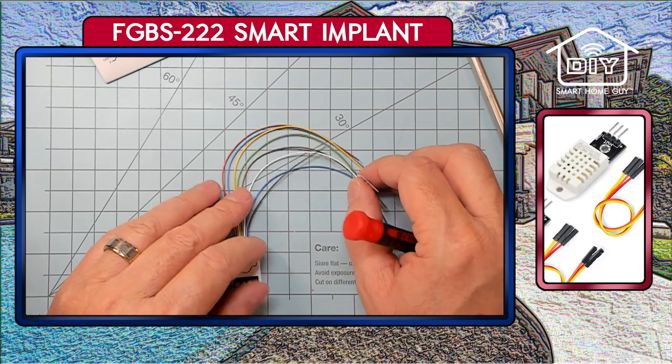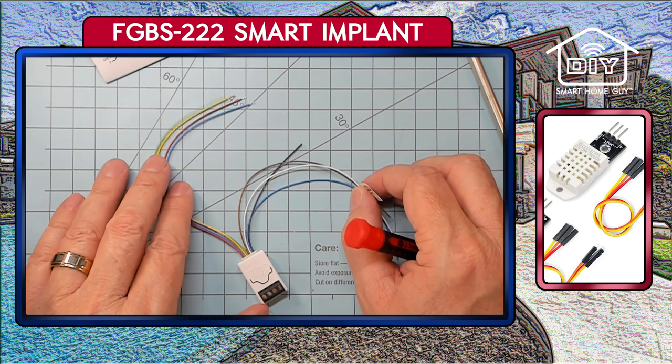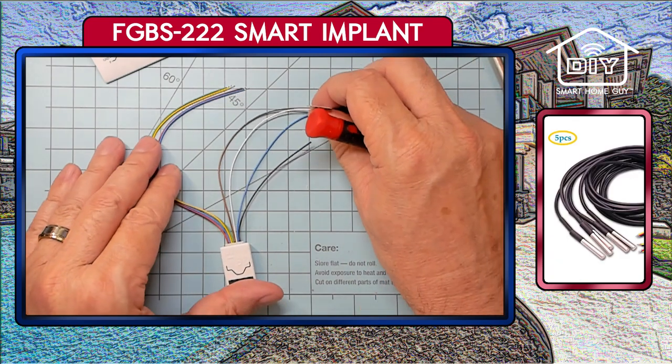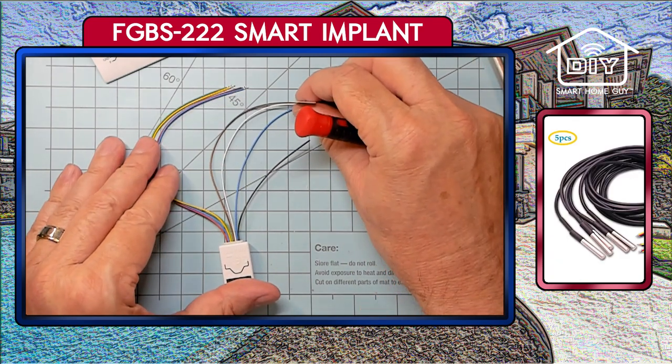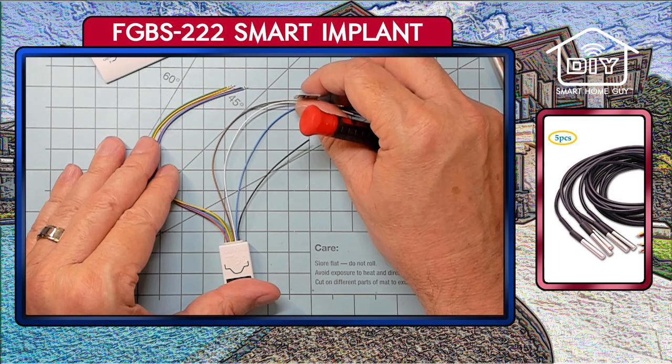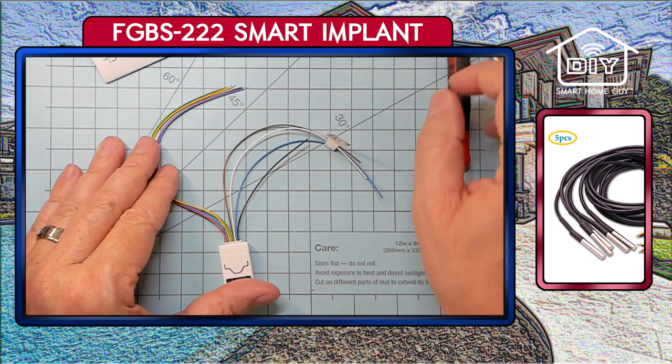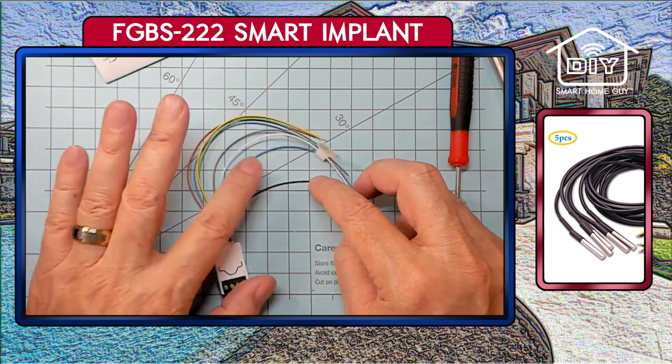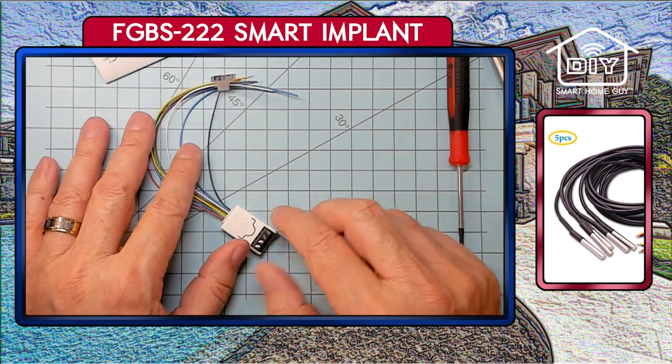The next three wires are for either one DHT22 digital temperature humidity probe or up to six DS18B20 sensors wired in parallel. I've not tested the temperature probe side, but that is a different video. And this little wire here, it's a Z-Wave antenna.